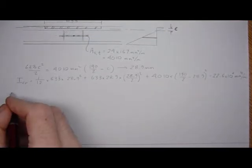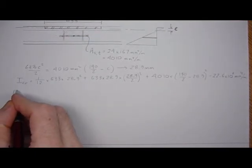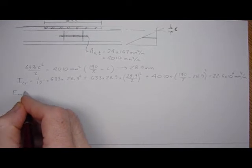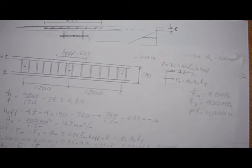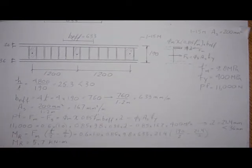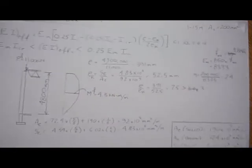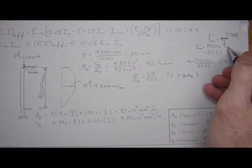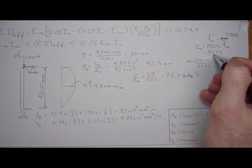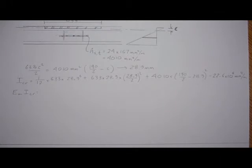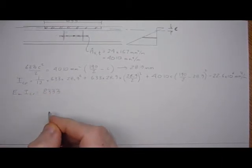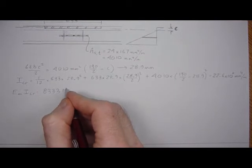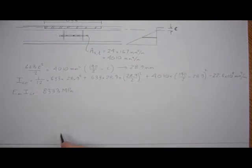And the EM I cracked is going to be, we should have it previously worked out right here, 850 F prime M. So we have some modulus of masonry, 8353 MPa.